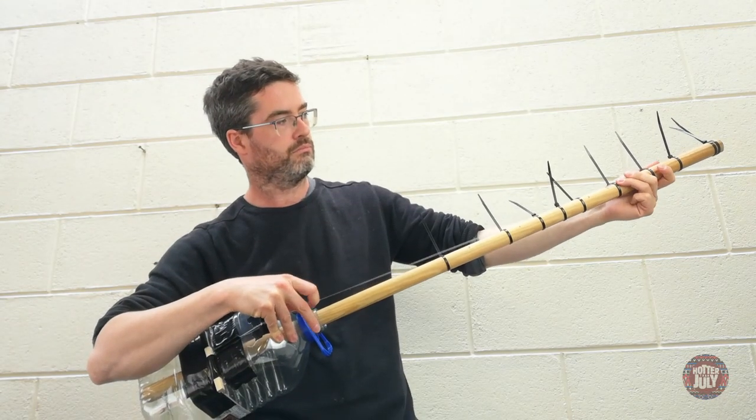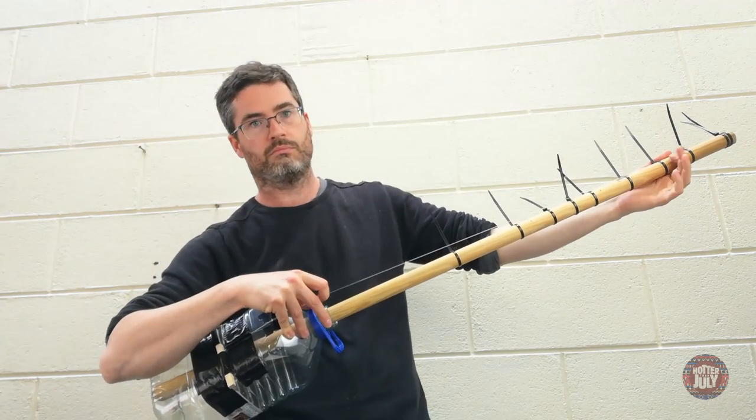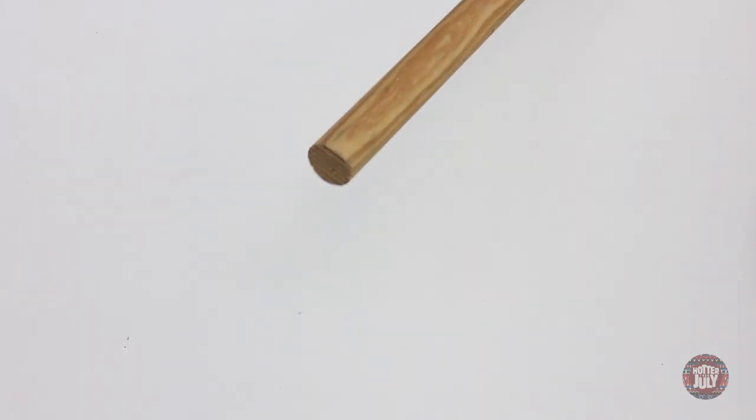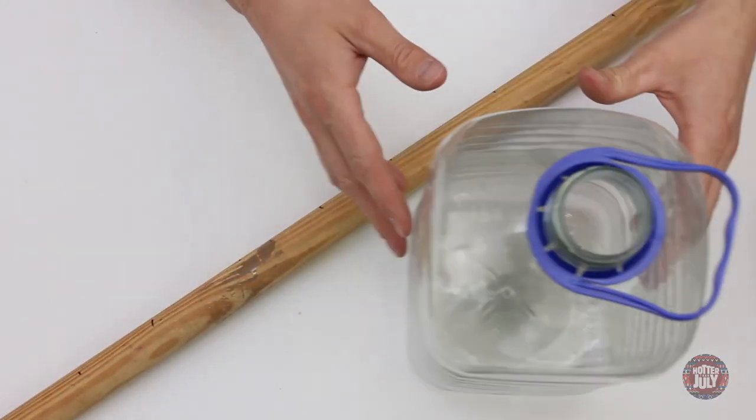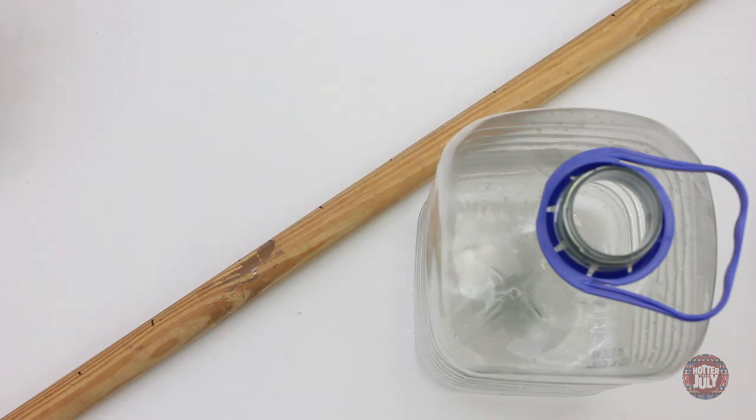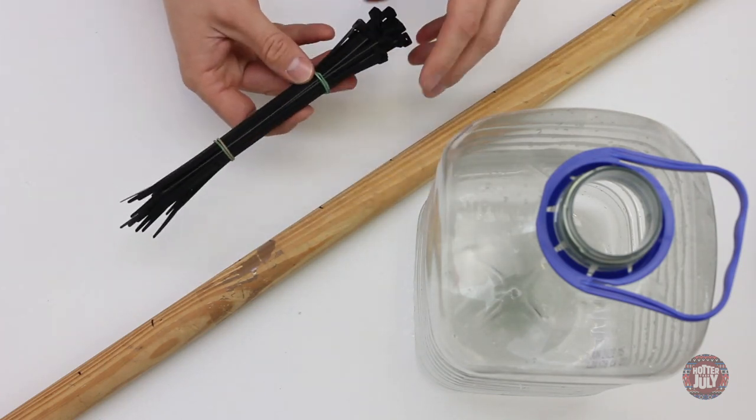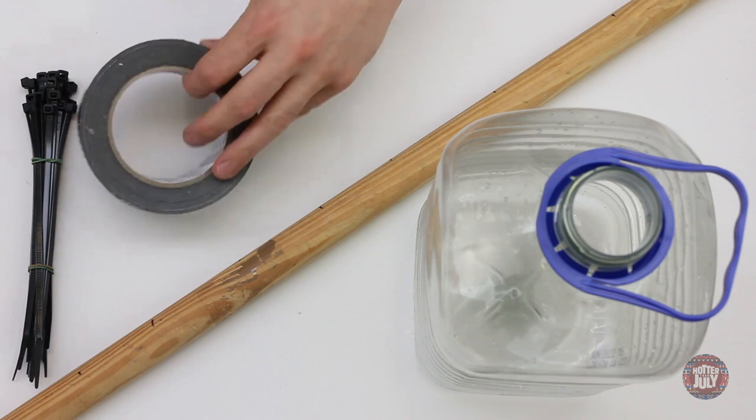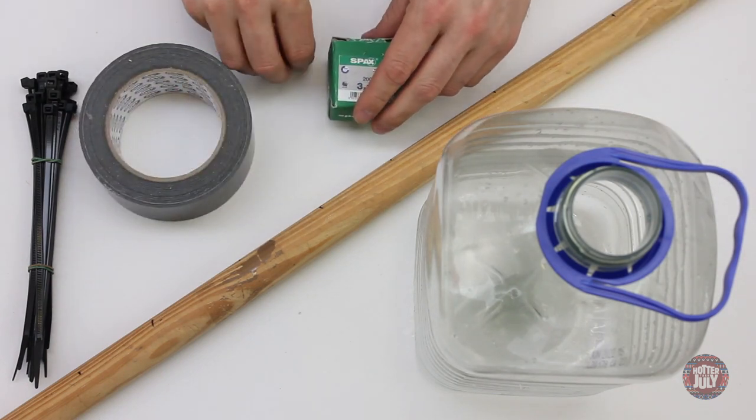Next we'll make a lute or an instrument with a neck. For this instrument I'm using a broomstick, a 5 litre water bottle, a short length of bamboo skewer, a piece of wood or pencil, some cable ties, gaffer tape, 4 short wood screws and some fishing line.